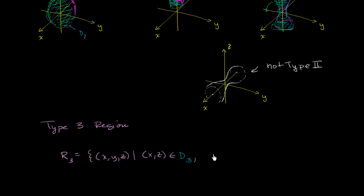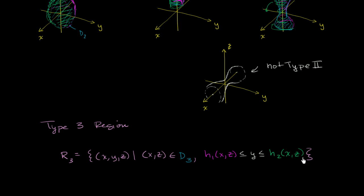And y is going to vary between two surfaces that are functions of x and z. So y is going to be greater than or equal to the surface h1 of x, z, and less than or equal to the surface h2 of x, z, which bounds y from above. And let's close our set notation.